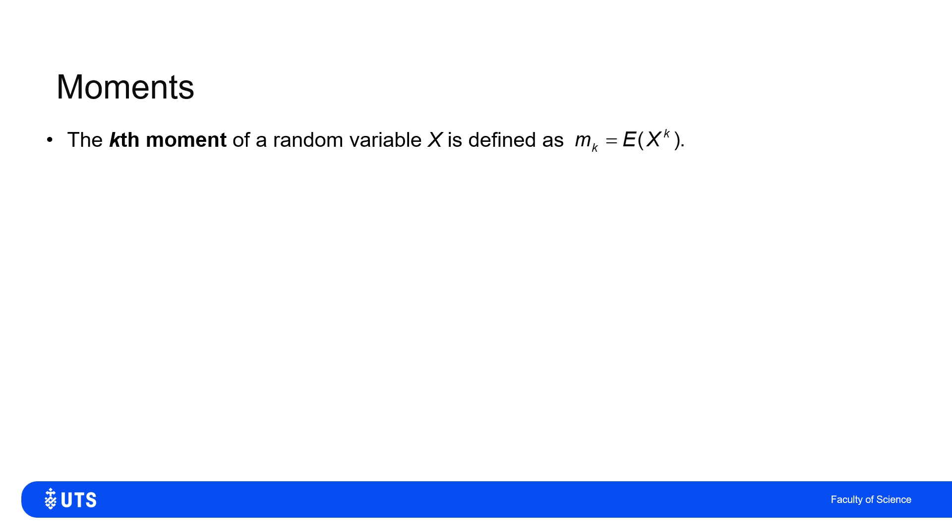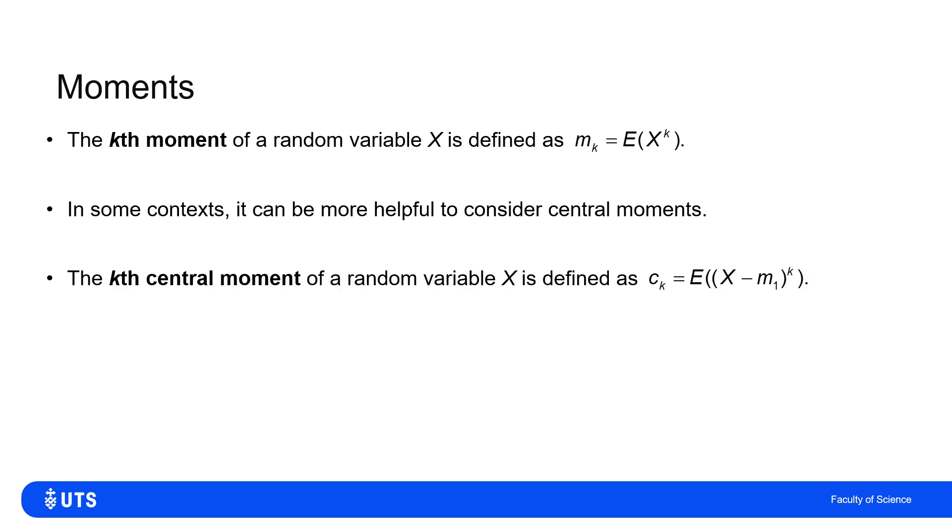Now, before we get to that, I just want to introduce a little bit of statistical definition. So, I've got a distribution, a random variable. I would say the kth moment is just the expected value of the variable to the kth power. So, the expected value of X to the k would be the kth moment of the variable X. You will also sometimes see, instead of what sometimes get called just moments or raw moments, we have a central moment. And a central moment is just looking at the moment relative to the expectation of the variable. So, the kth central moment is just the expected value of X minus its own first moment to the power k.